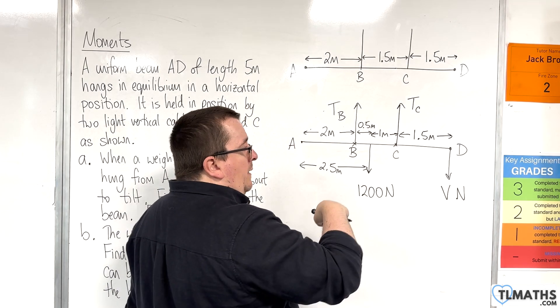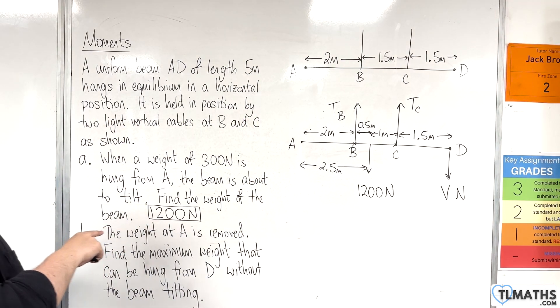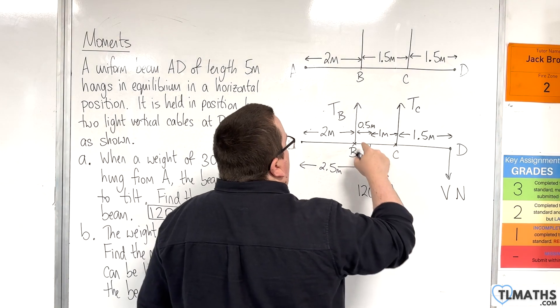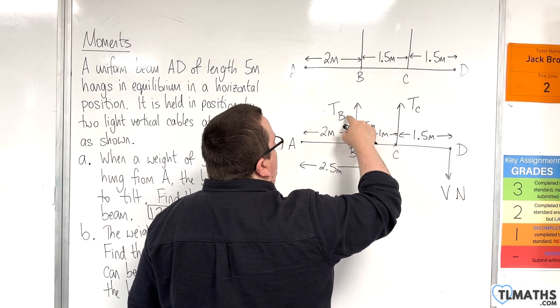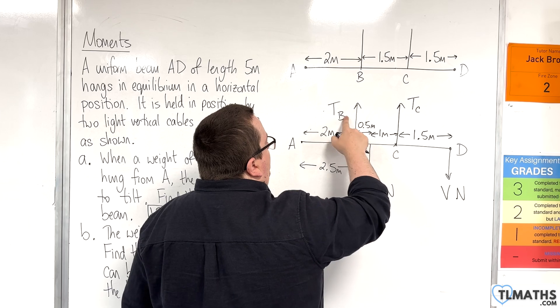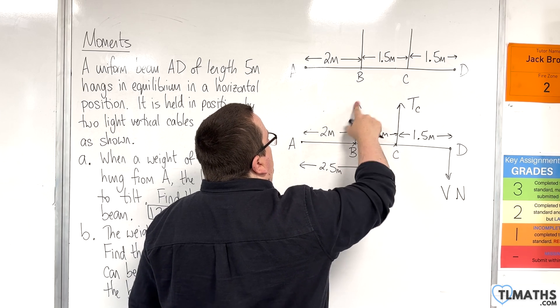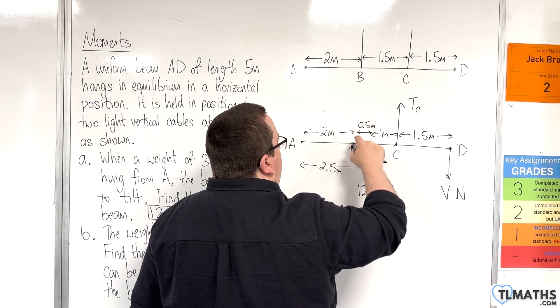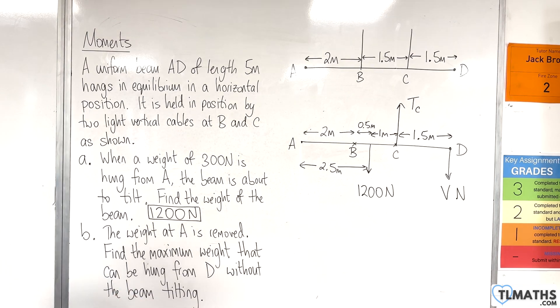rather than B like it did in part A. So that means that if it's tilting about C, the tension at B will now be 0. So that is now gone. Okay.